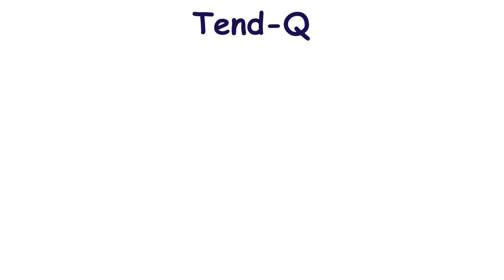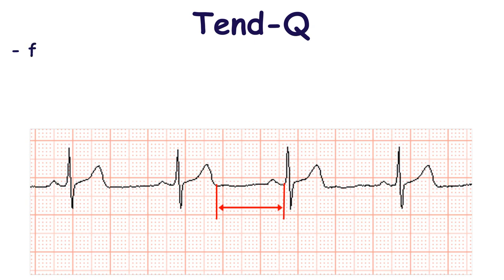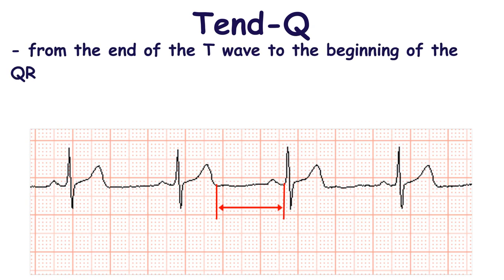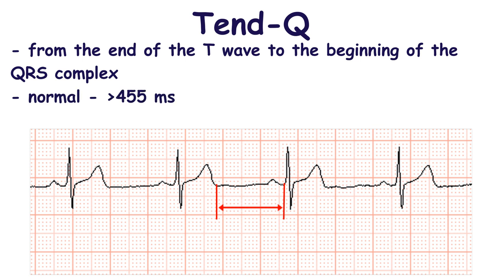Another ECG marker of left ventricular diastolic dysfunction is the TpQ interval. It is measured from the end of the T wave to the beginning of the QRS complex. Normal TpQ is more than 455 ms.